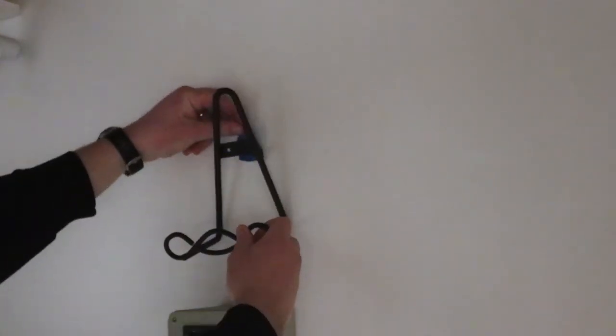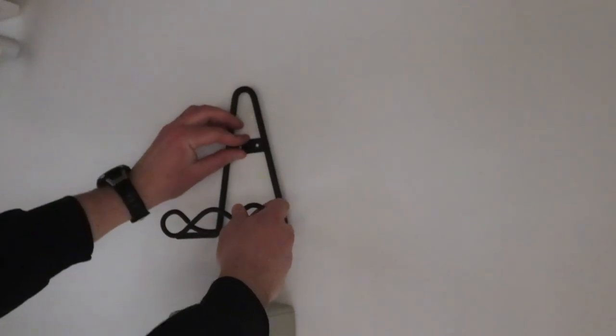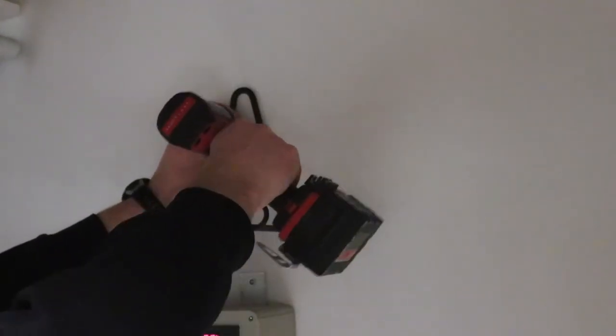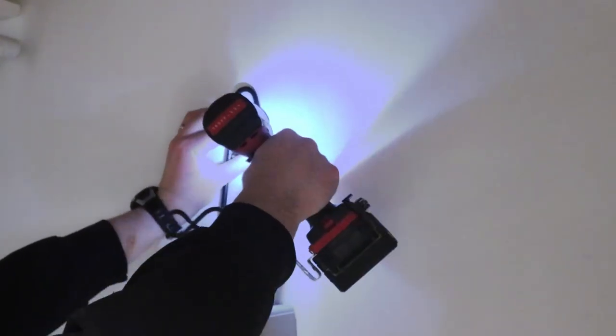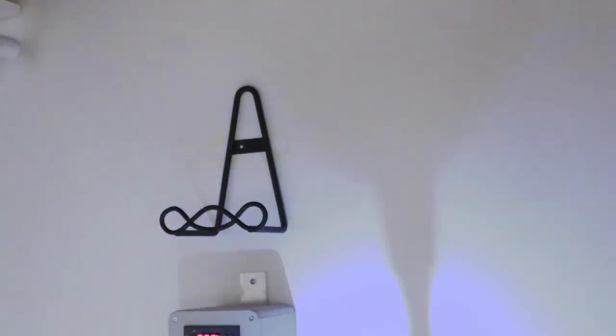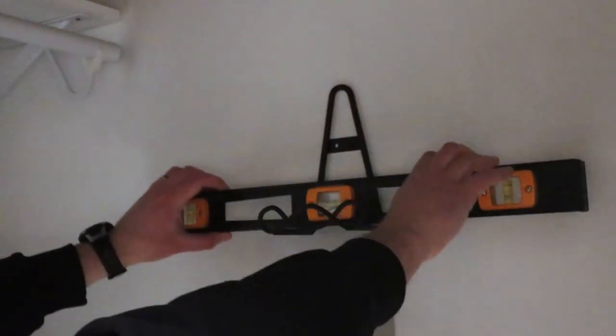Next is to simply screw the bracket into the wall. I started with one of the screws, then used a level to ensure that the bracket is installed horizontally.